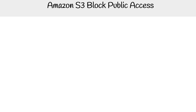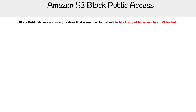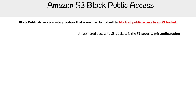Let's talk about Block Public Access for S3, as this is probably the most important security feature you need to know about S3. This is a safety feature that is enabled by default to block all public access to an S3 bucket, because the number one security misconfiguration is S3 buckets when people have anonymous or unrestricted access. AWS has made really sure that this is not going to happen to you, and they have way more than just this single measure to detect and tell you about whether you have open buckets.